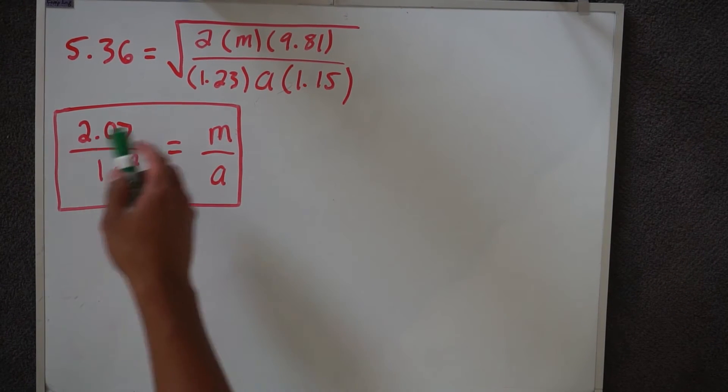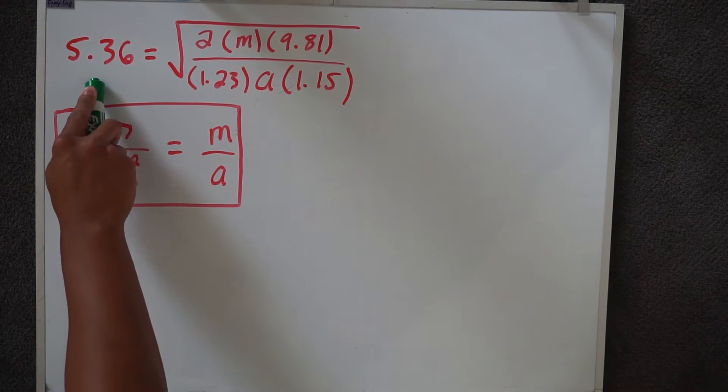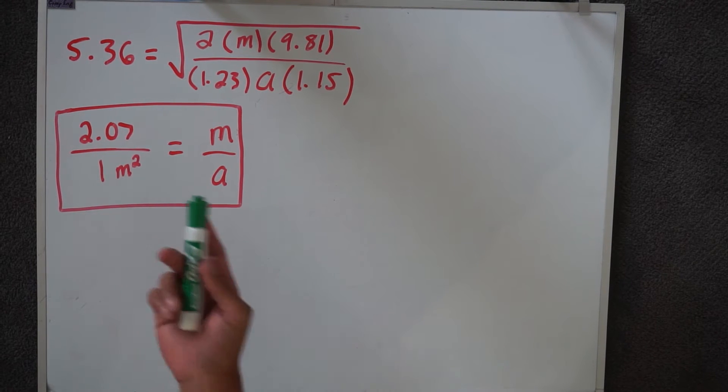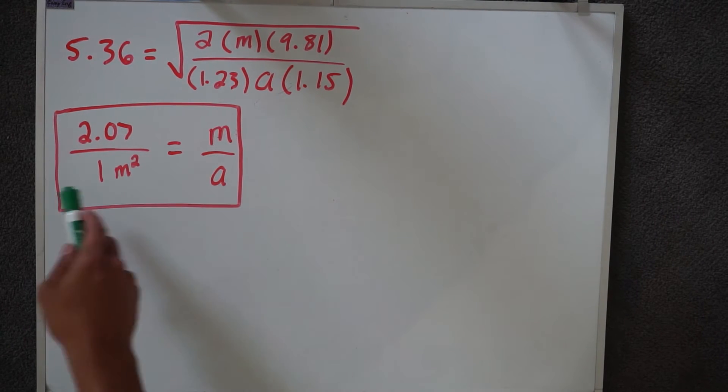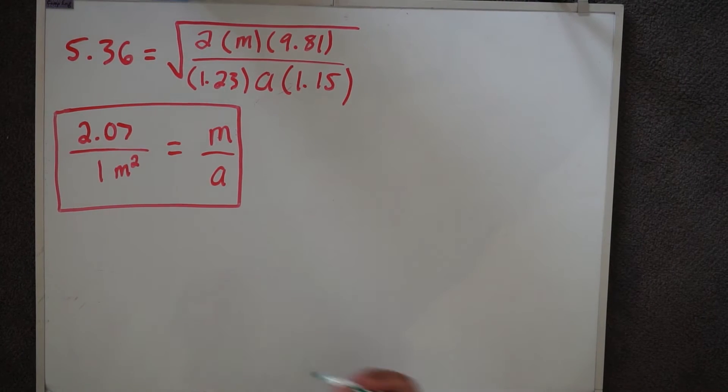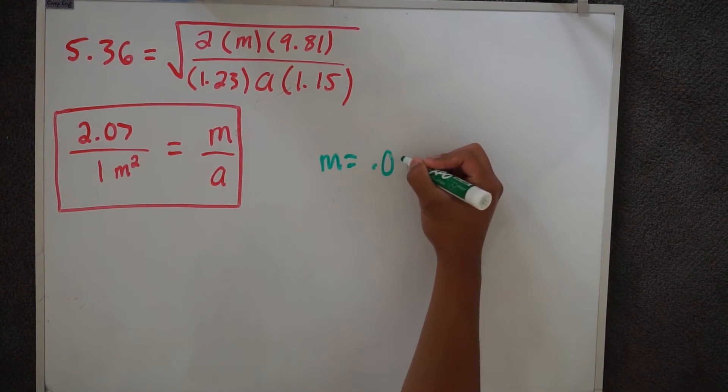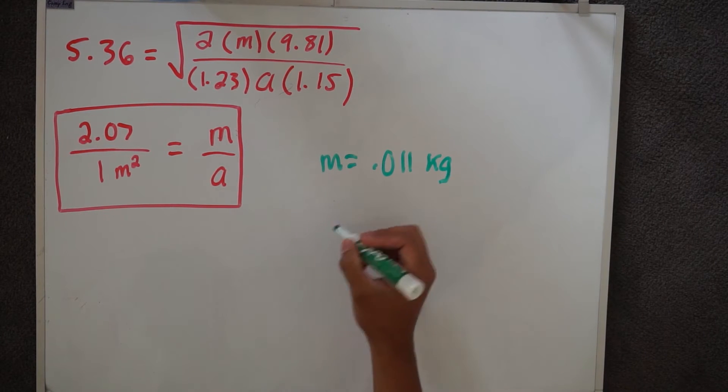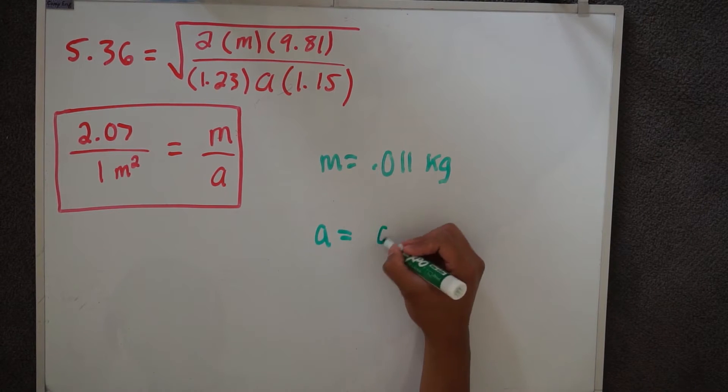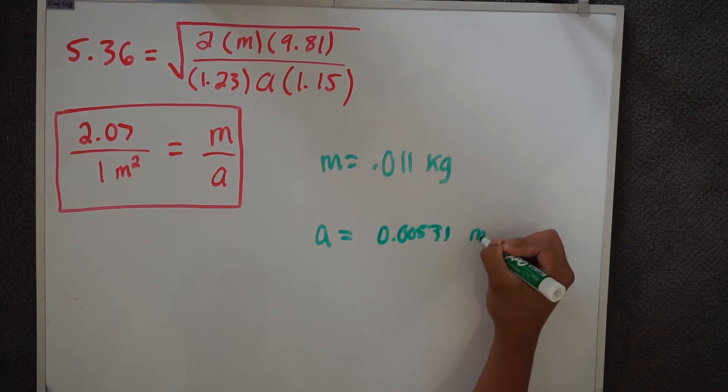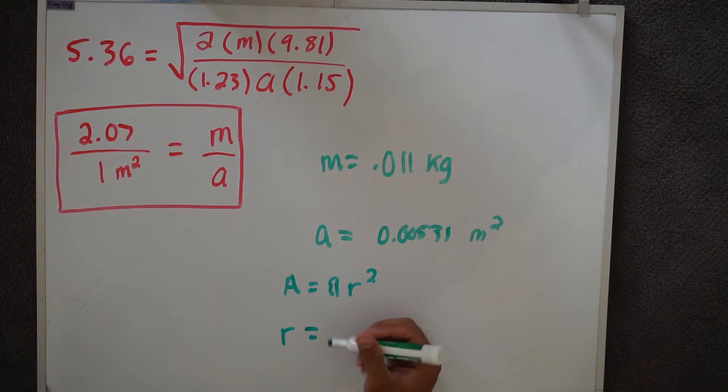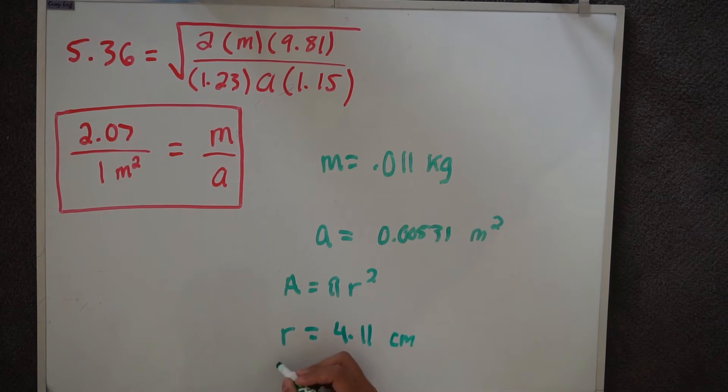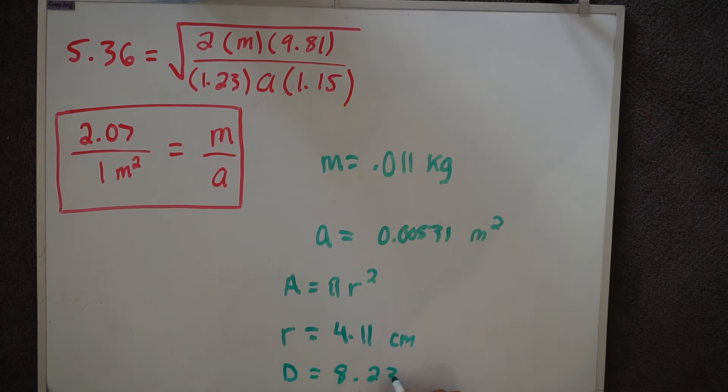So using the equation to find the terminal velocity, we know that this is our target terminal velocity, 5.36 meters per second. This is the velocity that most parachutes aim for. And so knowing this, we need to find our area. And so by solving this, we get this ratio, where if you know your mass, then you can find the area. So for our small scale model, the mass of our toy soldier was 0.011 kilograms. And when we plug this in, we get an area that equals 0.00531 meters squared. Now because this is a circle, an area of a circle is pi r squared. So using this, we find the radius to equal 4.11 centimeters. Meaning that our diameter equals 8.23 centimeters. So this is how wide our umbrella has to be for our small scale model.